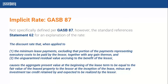Under GASB 87, the implicit rate itself is not explicitly defined. However, the standard references Statement No. 62 for an explanation of that rate — the rate that, when applied to minimum lease payments excluding a portion representing executory costs paid by the lessor together with any gain thereon and the unguaranteed residual value, would cause the present value at the beginning of the lease term to equal the fair value of the lease property at inception, minus any investment tax credit retained and expected to be realized by the lessor. This is similar to other standards, as we'll see in the next slide.